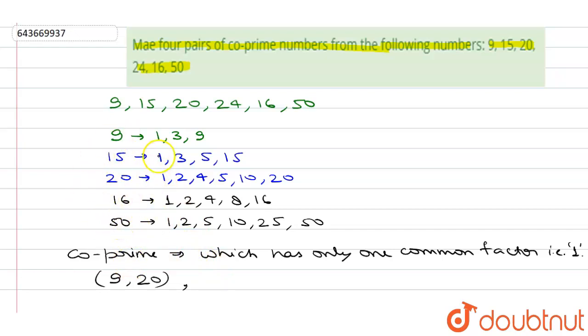Now look at 9 and 16. If we look at 9 and 16, we can clearly see that only 1 is a common factor in both. Therefore, 9 and 16 is also a pair of co-prime numbers.